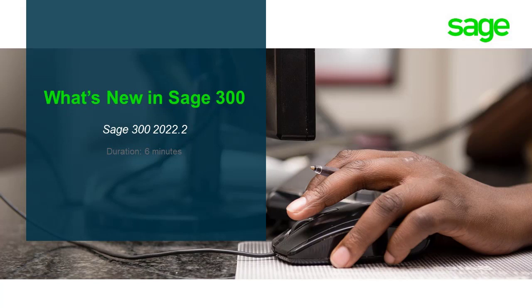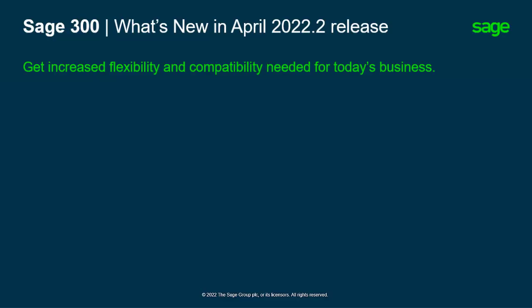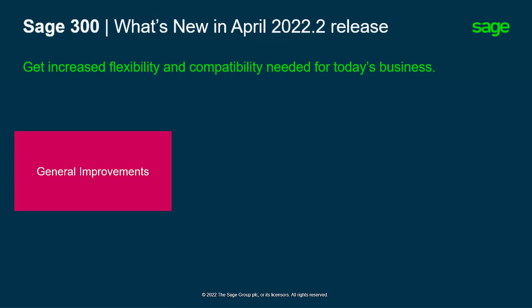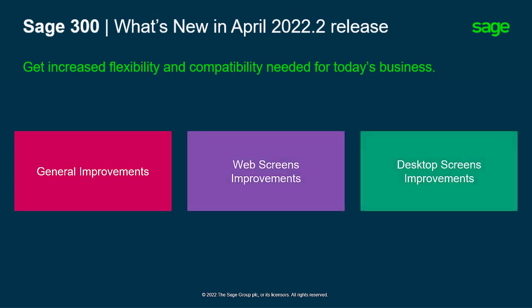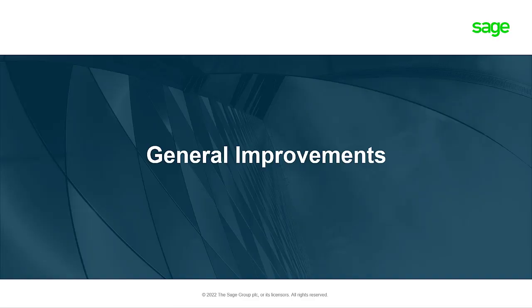Welcome to this video. Over the next few minutes, we will show you what's new in Sage 300 version 2022 product update 2. This release includes changes in three main areas: general improvements, web screen improvements, and desktop screen improvements. Let's start by looking at general improvements available in both Sage 300 Cloud web screens and in the Sage 300 Classic desktop screens.